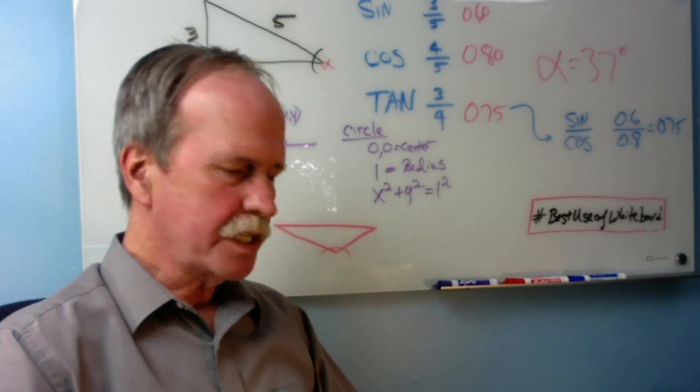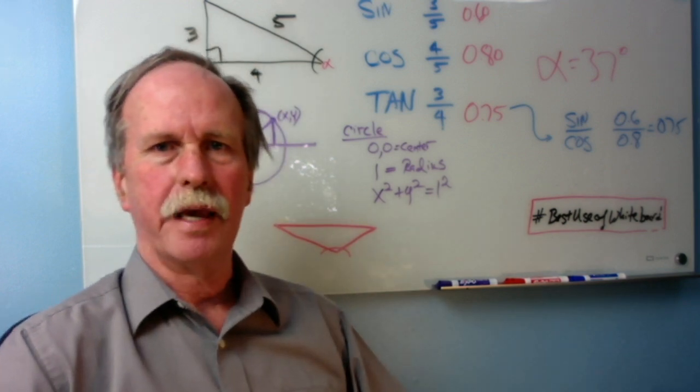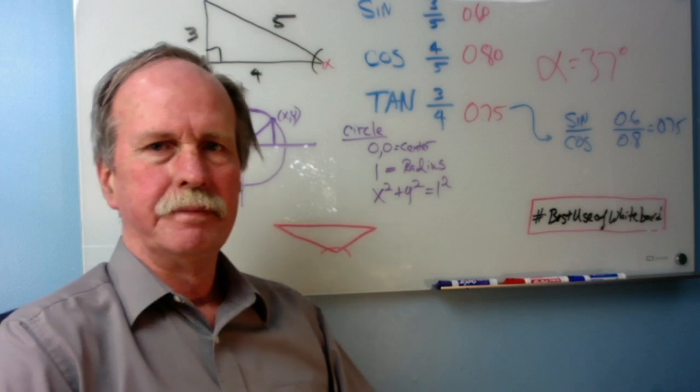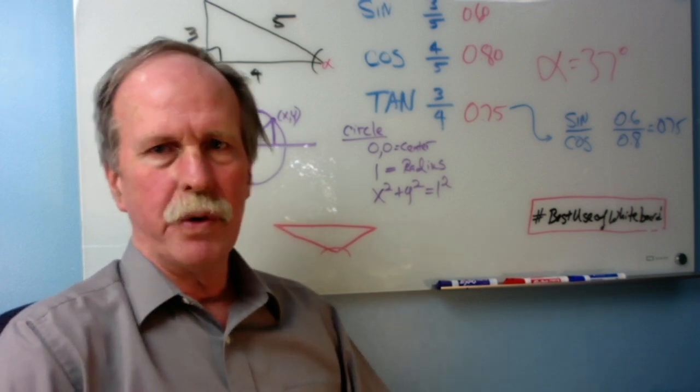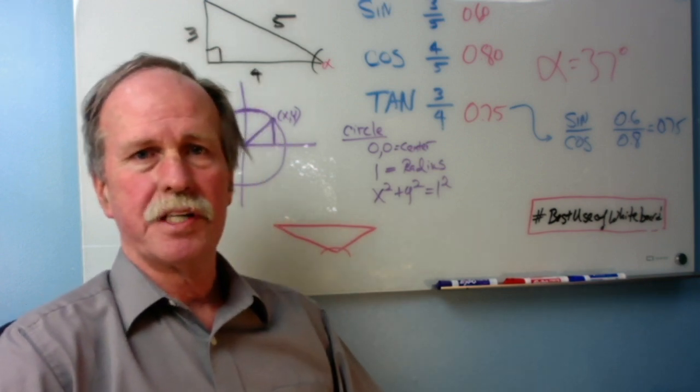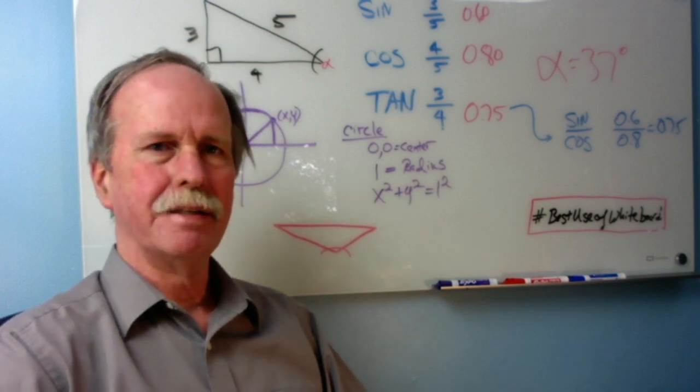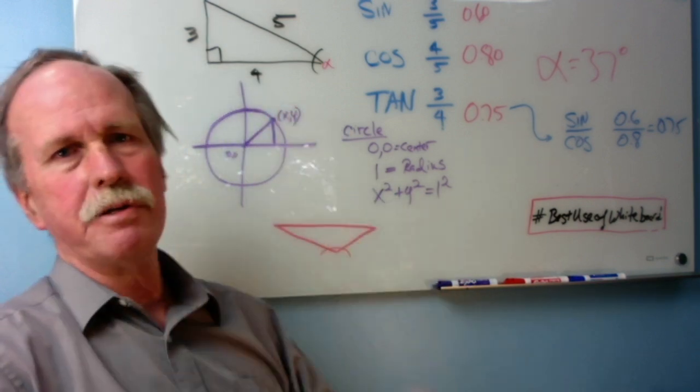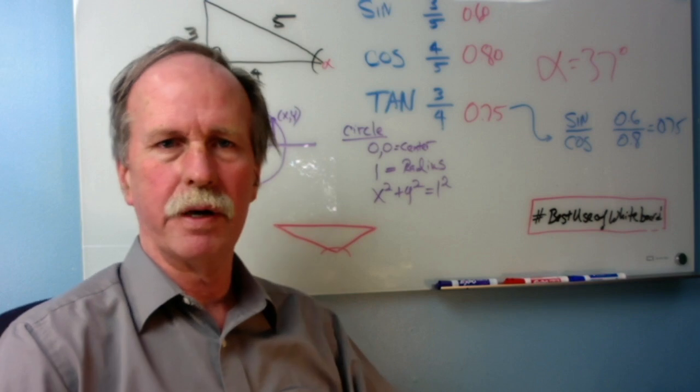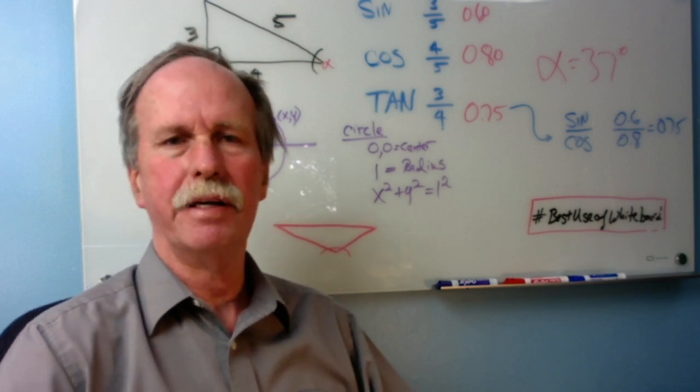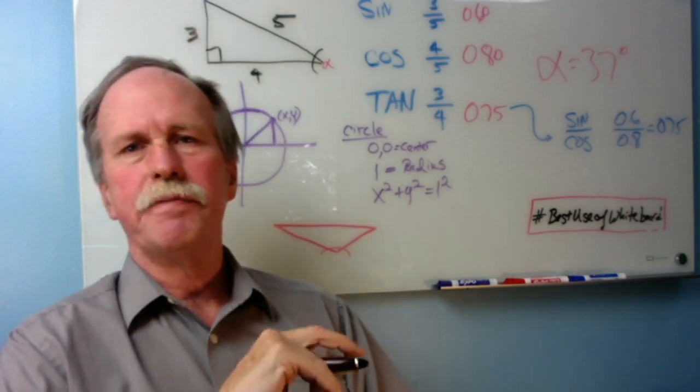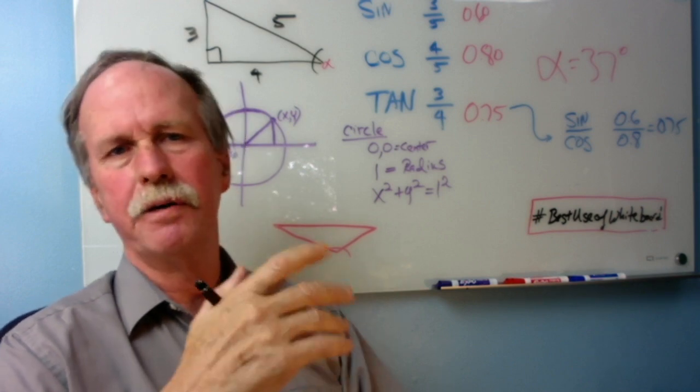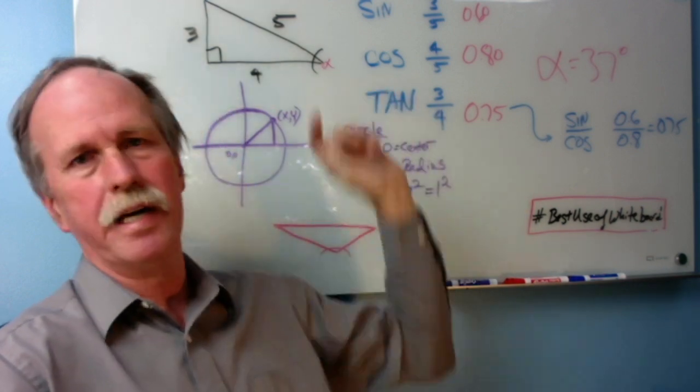But there's something interesting you might want to look at. Look at sine over cosine. 0.6 over 0.8 also equals 0.75, because the tangent is the sine over the cosine. We're going to learn why that's important here in a moment. This superficial treatment of sine and cosine works fine for acute angles, angles less than 90 degrees.